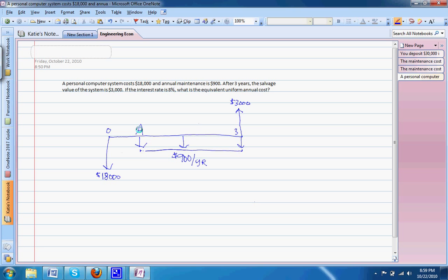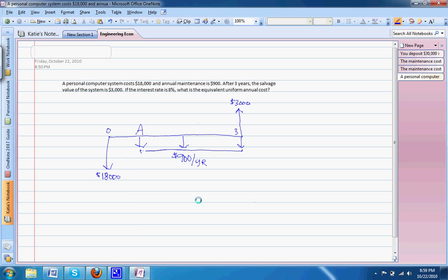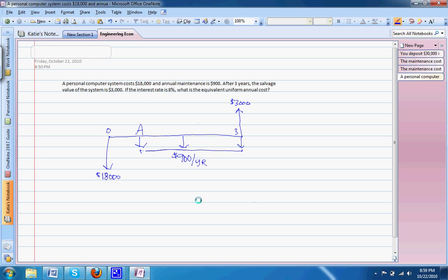And we're trying to solve A. Here in this problem, one key factor to think about is we need to convert that $3,000 and that $18,000 into the same time as A. Right now, we have basically present worth which is the $18,000 and future worth, which is our $3,000. So, we need to find those annual payments.